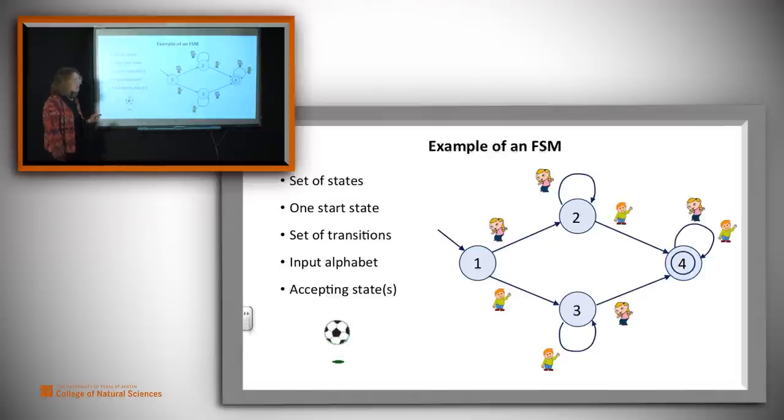And then if we keep getting girls, we stay in two. That's the case where we only have girls. We're not legal yet. If we keep getting boys, we stay in three. And then if we're in two and we see a boy, we go to four. Same thing if we're in three and we see a girl, we go to four. And now we're in a state where we have at least one boy and at least one girl, and that's our accepting state. At this point, add some more kids or don't. You have a legal team.